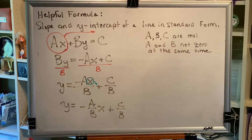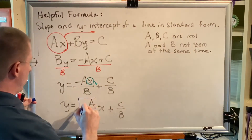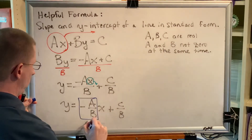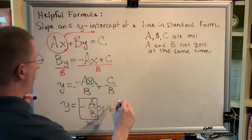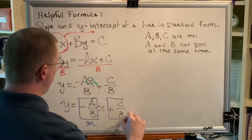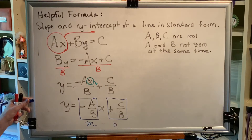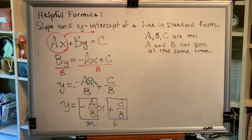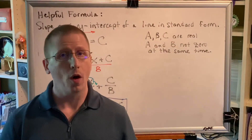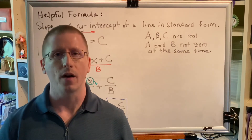This is slope-intercept form for the line. The slope m equals negative a over b, and the y-intercept, which we associate with lowercase b, equals capital C over b. These two formulas will save a lot of time when solving problems involving slanted lines, especially when writing their equations.